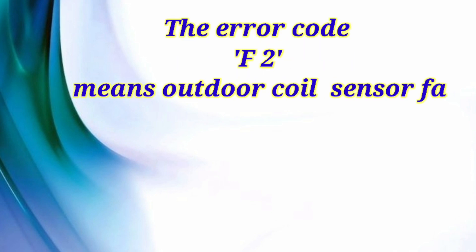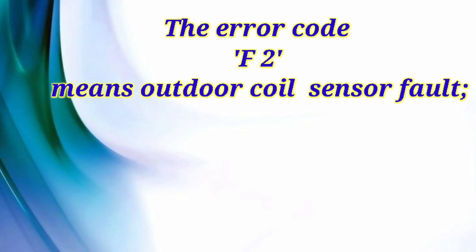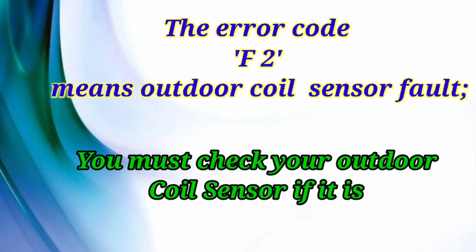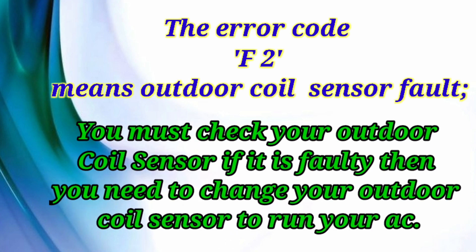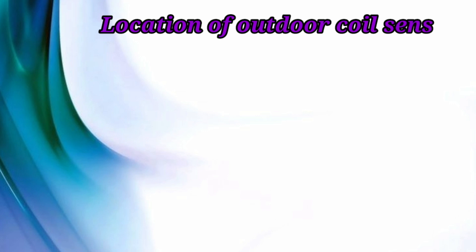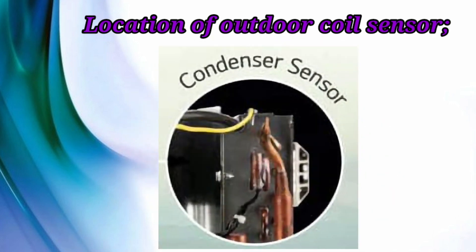Error code F2 means outdoor coil sensor fault. You must check your outdoor coil sensor — if it is faulty, you need to change it to run your AC, otherwise it will not work. This sensor is also called the condenser sensor, and you can see its location on the outdoor unit.